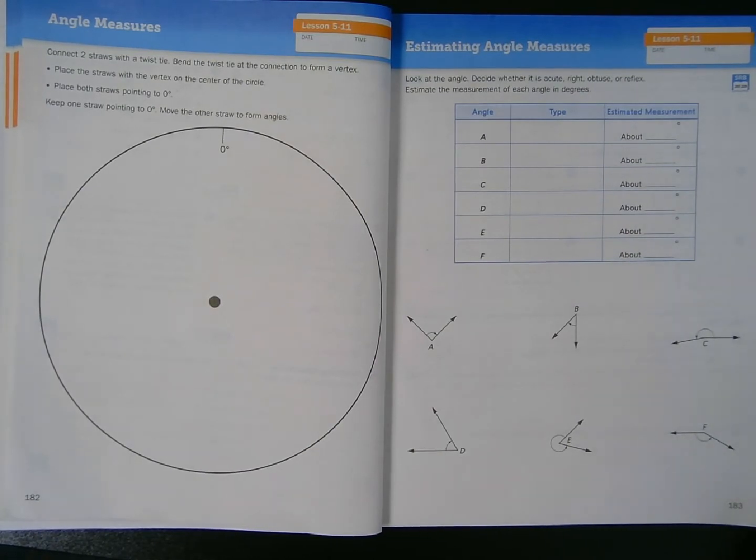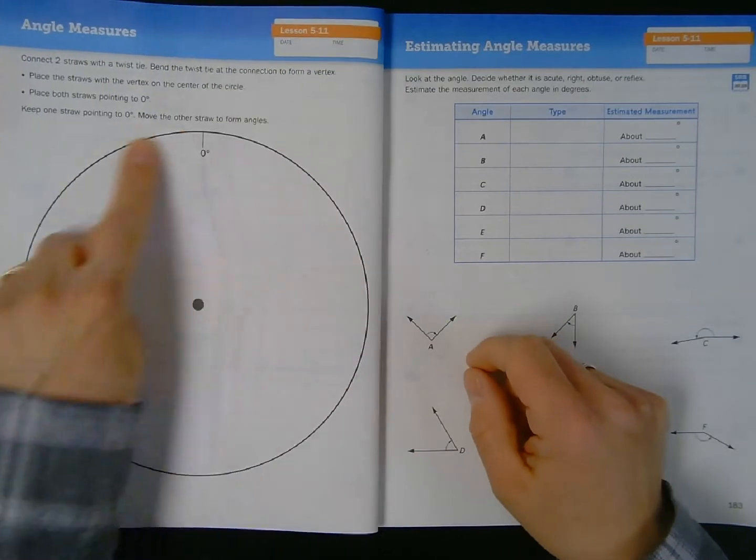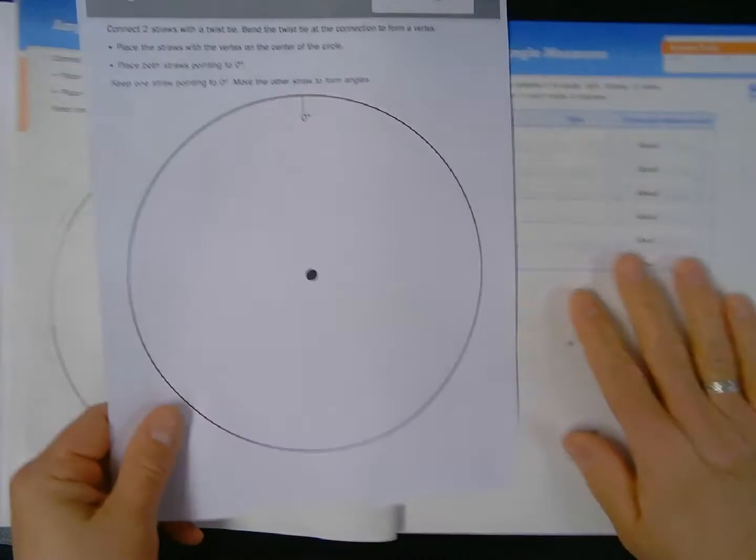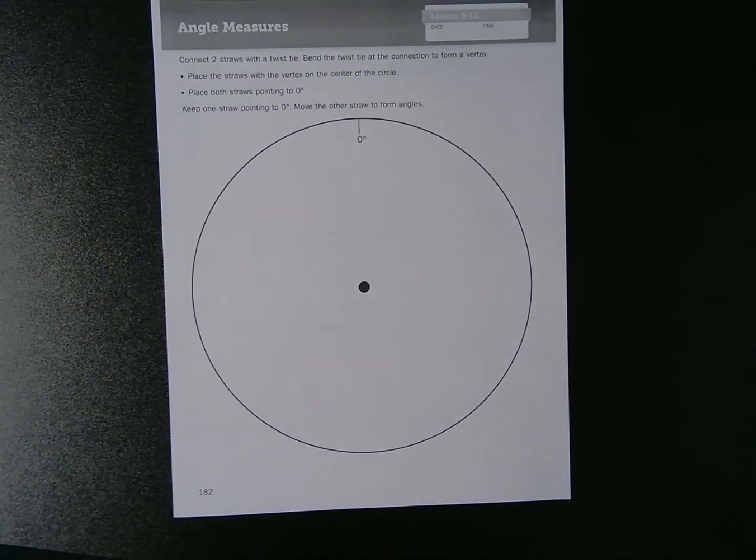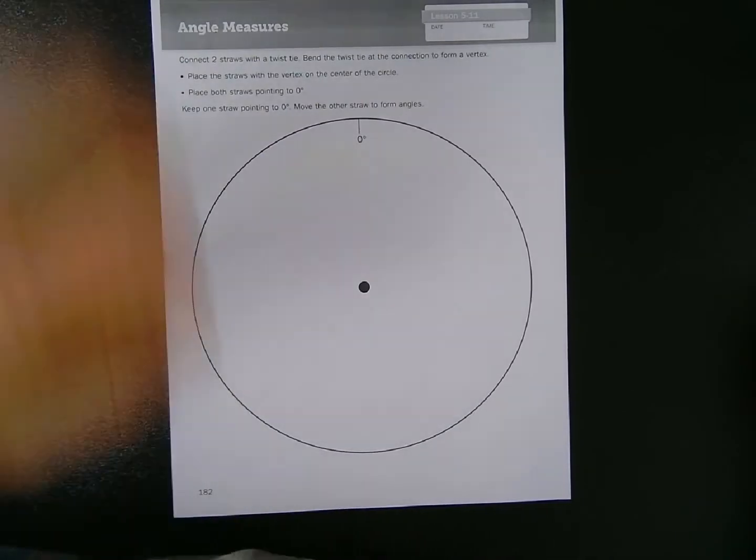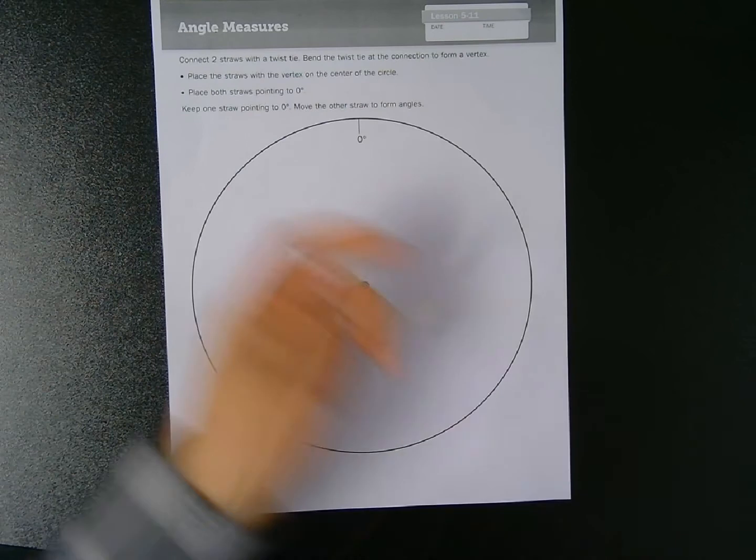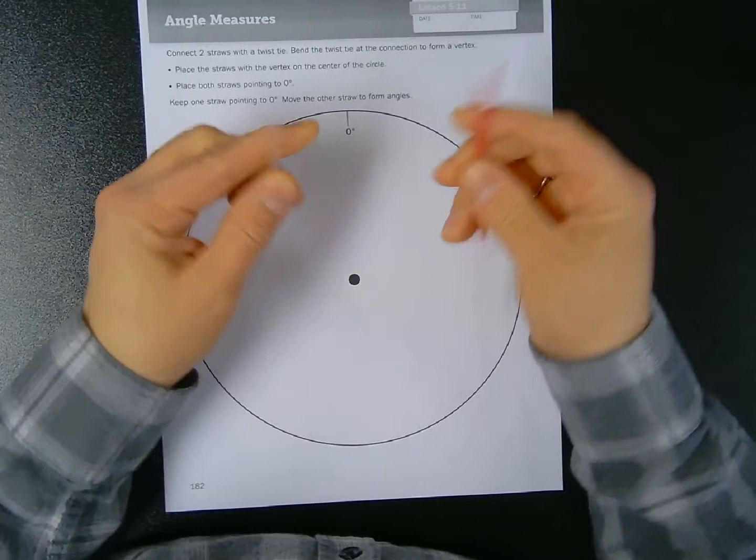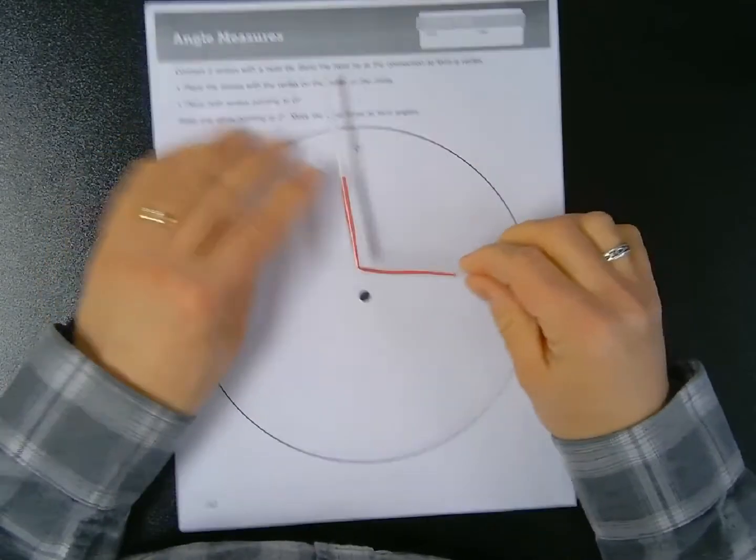On the left-hand side of page 182, I have this circle that I can use to model building angles. The instructions read: connect two straws with a twist tie, bend the twist tie at the connection to form a vertex. So I have two straws and a twist tie that I can connect together like so, and by doing so I create a vertex that makes an angle.